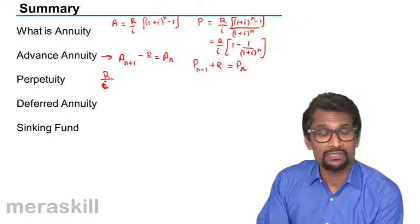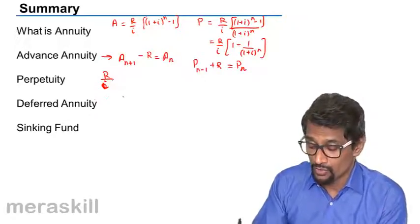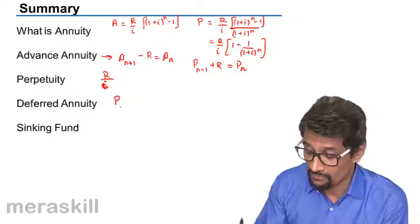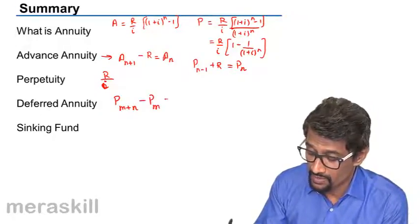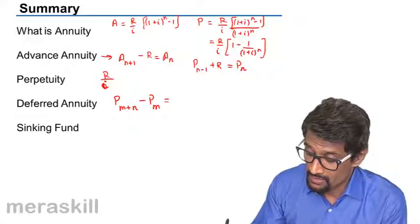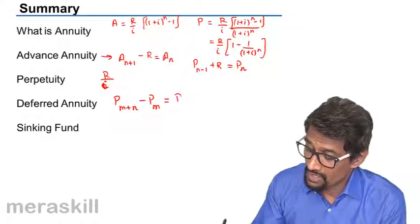Then deferred annuity we did, a case wherein this is going to be present value. This is valid specifically for deferred annuity. We get P of M plus N minus P of M is going to be P of N.